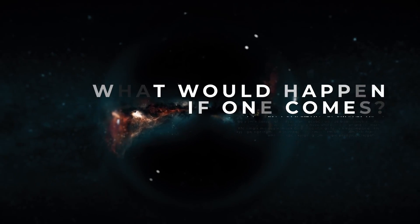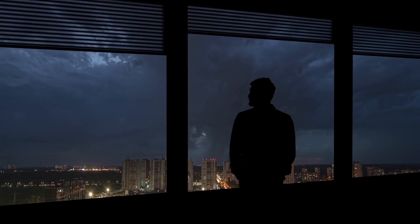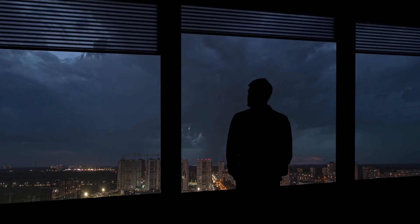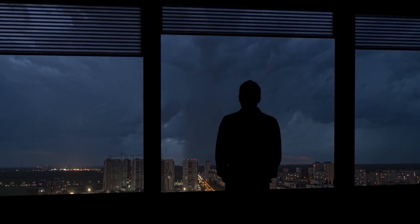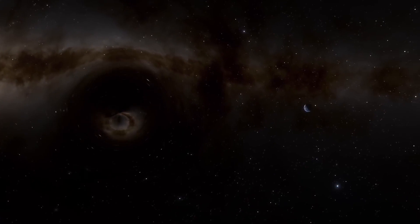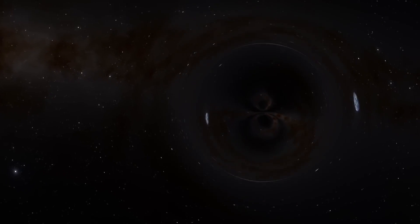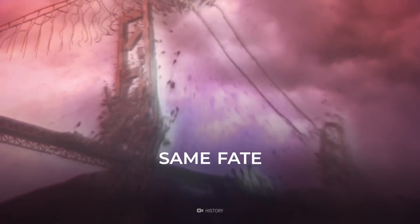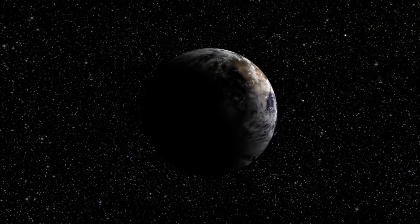What would happen if one comes? We may not know if a rogue black hole is coming towards us, but we will see the effects of it as it crashes through the solar system. A rogue black hole would fly through, drawing in anything and everything that it touches. Our planet would meet the same fate as all the other planets in our solar system, along with our sun.